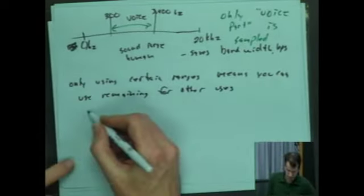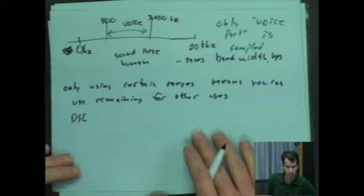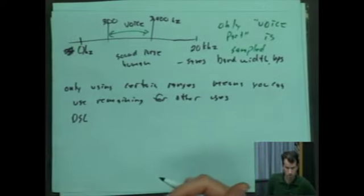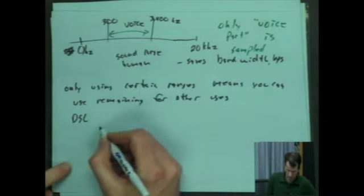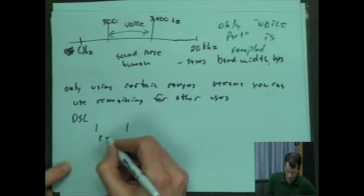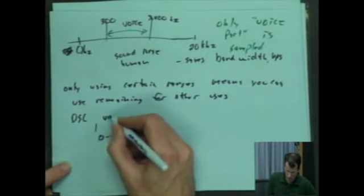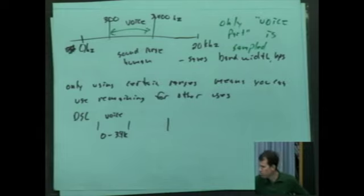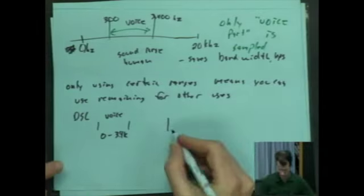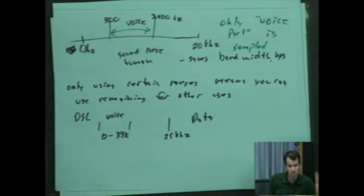You guys ever heard of DSL? So DSL uses the same phone line that you would normally use for a telephone call, but it sends data over that line. So what that means is DSL reserves the 0 to 3.4K for the voice. And then starting up here, it starts at about 25 kilohertz. They put data up here.